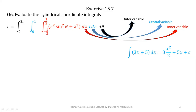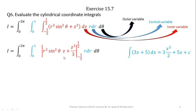With respect to Z, R and Theta will behave like constants. Whenever you are performing integration, please remember that with respect to one variable, all other variables behave like constants. So in this term, R squared sin Theta is constant with respect to Z and will behave just like the constant 5 in our example. Performing the integration with respect to Z, we have R squared sin squared Theta into Z plus Z cubed over 3, for the given limits minus 1/2 to 1/2.